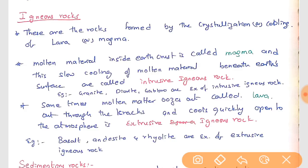These igneous rocks, after crystallization and cooling, they are called igneous rocks. The molten material inside the earth crust is called magma and this low cooling of the molten material beneath the earth surface is called - if you take like this, if you consider like this, this is earth and this is magmatic chamber.